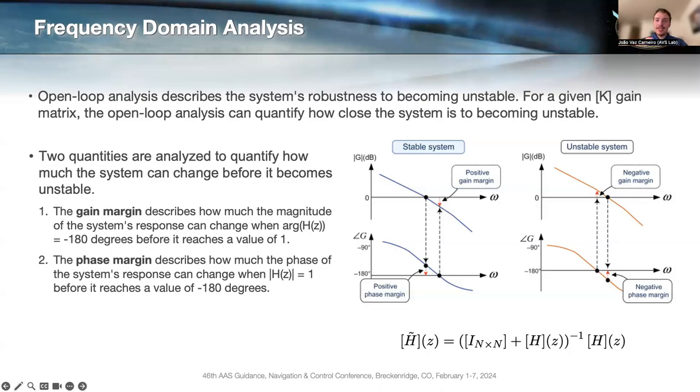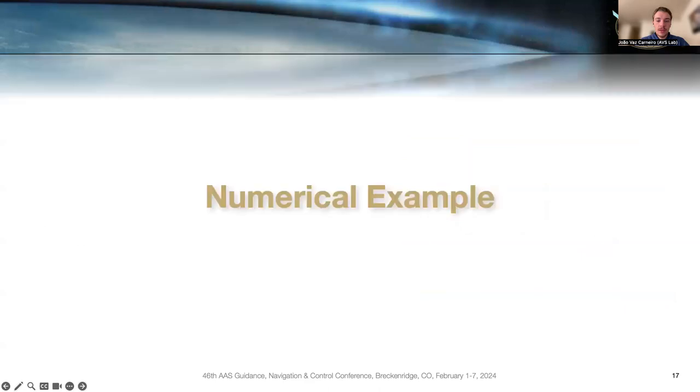The gain margin tells us if the system's response is at minus 180 degrees, how close are we to that gain equal to one or equal to zero dB. That's our gain margin, how much can we gain the system until it becomes unstable. Similar thing for the phase margin. The phase margin is when the system's gain, the output is one or zero dBs, what's our margin in terms of phase to that minus 180 degrees. Obviously the bigger the margins, the better. It means our system is more robust. It's farther away from that instability region.